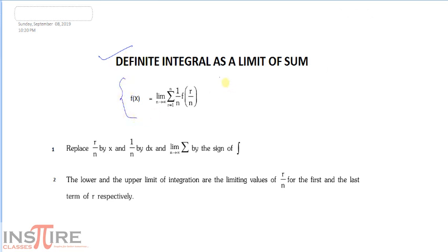Suppose a function f is given by: f = limit n approaches infinity, sigma r goes from 1 to n, of (1/n) · f(r/n). We will call this type of expression the definite integral as a limit of sum form.